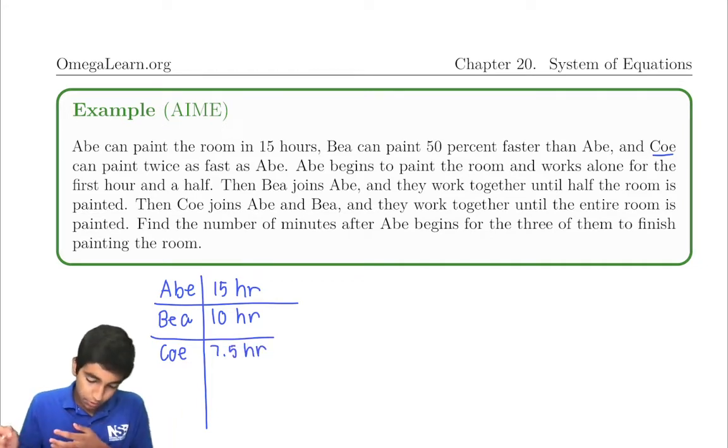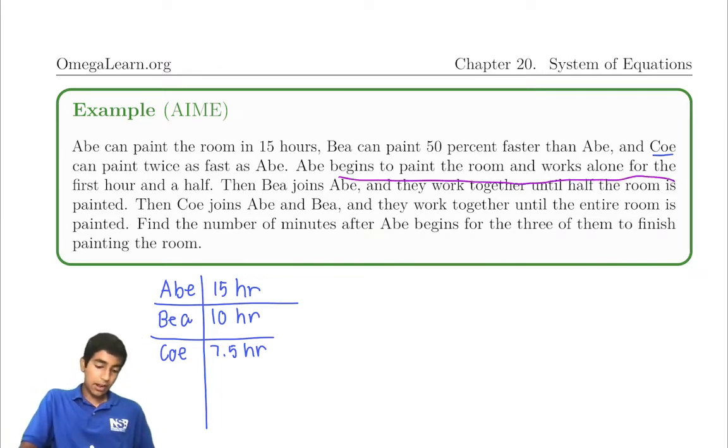So let's continue with the problem. First, Abe begins to paint the room and works alone for 1.5 hours. So Abe will paint alone for an hour and a half. We're actually just going to write it as 90 minutes. You'll see why later.